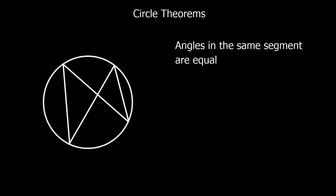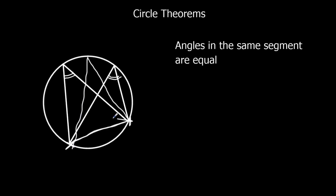Angles in the same segment are equal. So two angles that are made from the same chord — so this angle up here and this angle up here, they come from the same points, the same chord, the same segment — they're equal. So in any place where you do that, whether it's here or along to the side, it doesn't matter, they're all going to be the same angle. Angles in the same segment are equal.